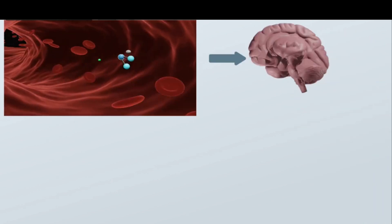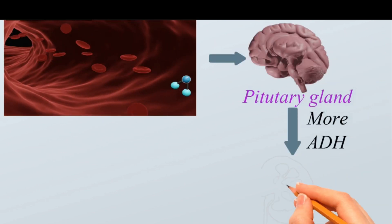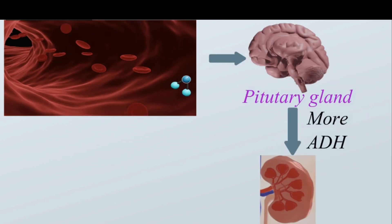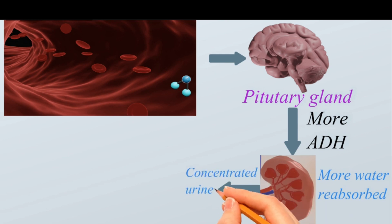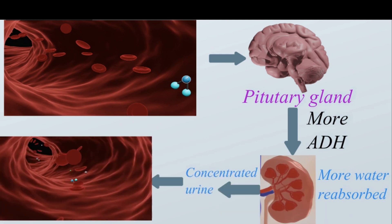When there is a shortage of water in blood, the brain detects this and the pituitary gland releases more ADH, which causes the kidney tubules to become more permeable to water, so more water is reabsorbed. A small amount of concentrated urine is produced, which increases the volume of water in blood back to normal.